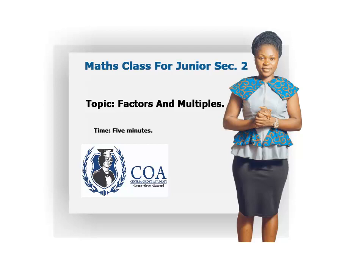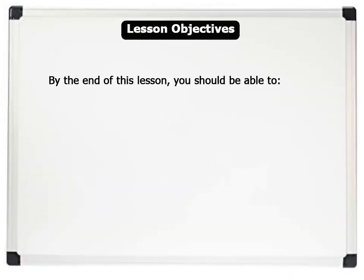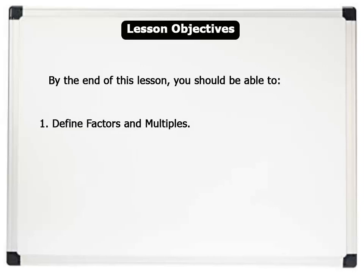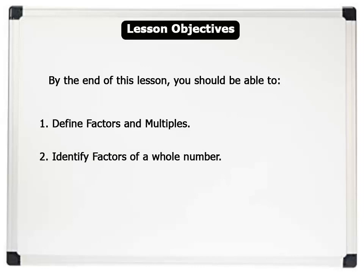Lesson duration remains 5 minutes. Let us see our lesson objectives. By the end of this lesson, you should be able to: Define Factors and Multiples, Identify Factors of a Whole Number, and List one or more multiples of a whole number.